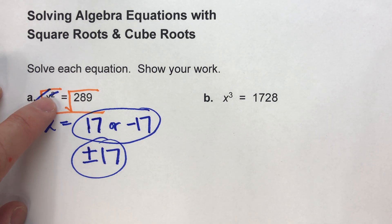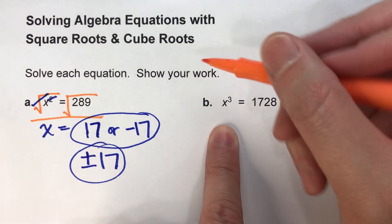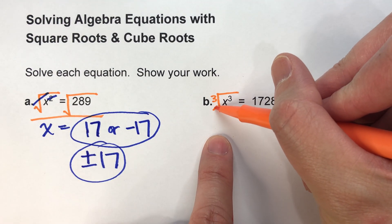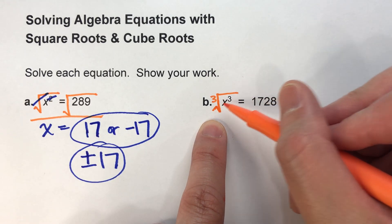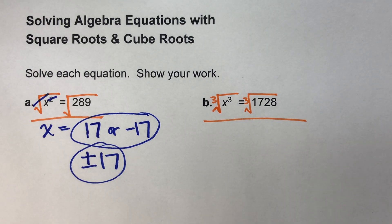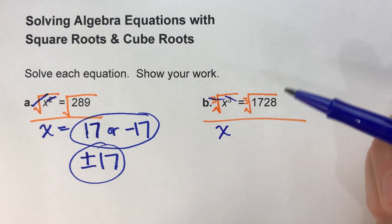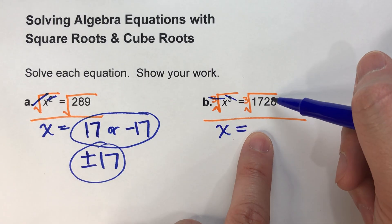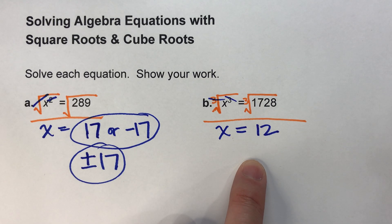Now let's do x to the third power. To undo x squared we square root; to undo x cubed we have to cube root. That's a radical symbol with a little 3 to show it's a cube root, not a square root. What we do to one side of the equal sign we have to do to the other. Cubing and cube rooting undo each other, so I'm left with x. Drop down the equal sign. The cube root of 1728 is 12, so that's my answer.